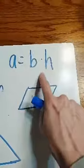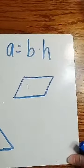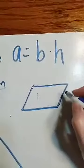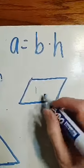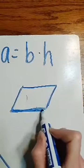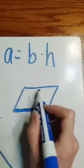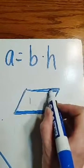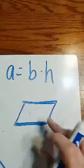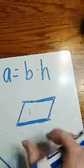So base times height, that sure sounds a lot like finding the area of a rectangle or a square. Well, it is. Here's the tricky part of a parallelogram: we have the base and that's the bottom just like in a square or rectangle. And it's obviously going to be the same as this because in order for these lines and these lines to be parallel, these two need to be the same length and these two need to be the same length.